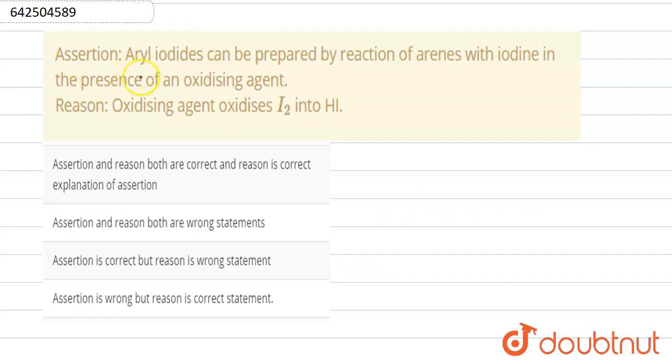Hello, the question is assertion. Aryl iodide can be prepared by the reaction of arenes with iodine in the presence of an oxidizing agent. And the reason is oxidizing agent oxidizes iodine into HI.